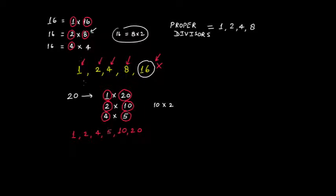Now, we saw in the previous example that is for the number 16. We saw that if we remove that particular number from the factors list, then the remaining factors would be the proper divisors of that number. So similarly, in this case, if we remove 20, that is exclude 20, and the remaining numbers are the proper divisors of that number. So in this case, 1, 2, 4, 5 and 10 would be the proper divisors of number 20.